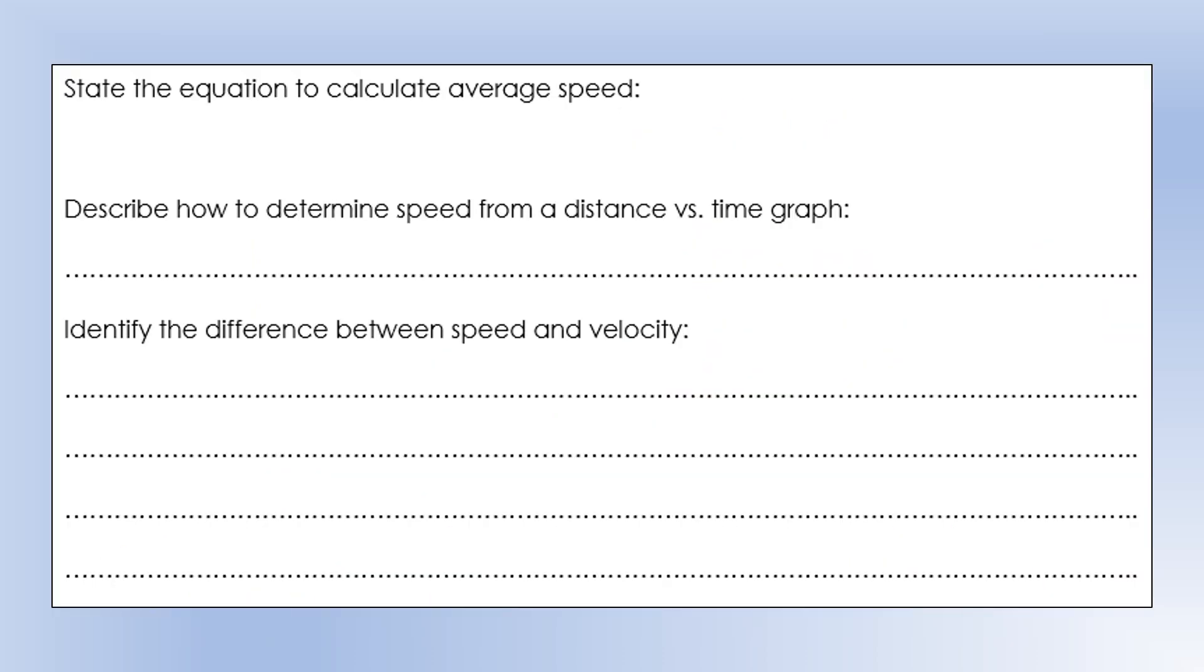State the equation to calculate average speed. Average speed is the distance you travel divided by the time it's taken. Speed is the gradient of a distance versus time graph, or change in distance divided by change in time.